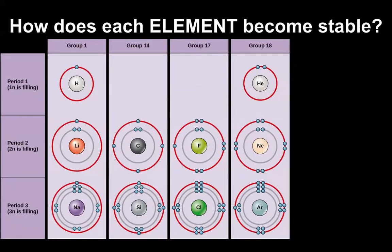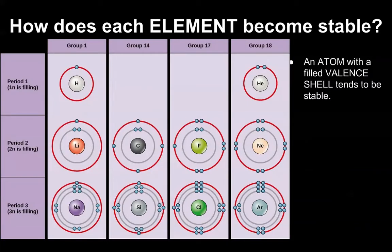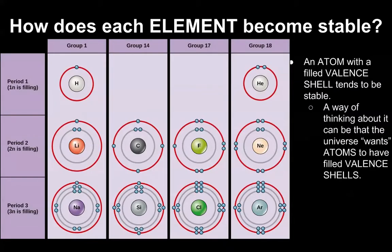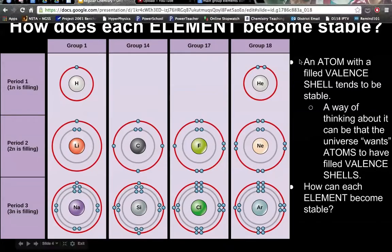How does each element become stable? An atom with a filled valence shell tends to be stable. A way of thinking about this is that the universe wants atoms to have filled valence shells. From our Bohr models, you can put 2 electrons on that first shell, 8 on the next shell, and up to 18 in the shell after that. So how can each element become stable based on this filling of the shells?